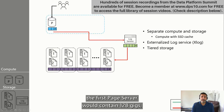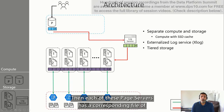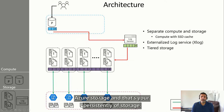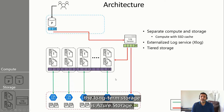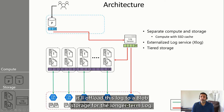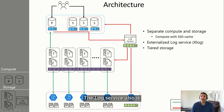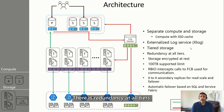So if you have a Hyperscale database, the first page server would contain 128 gigs, the second 128 gigs, and so on. There are N number of page servers, each with a replica. Each of these page servers has a corresponding file of the same 128 gig size on Azure Storage — that's your persistent layer. Even if page servers go down, the long-term storage is Azure Storage. The log service, being a stateless service, will offload this log to blob storage for longer-term log retention for point-in-time restore.